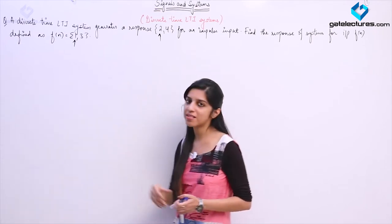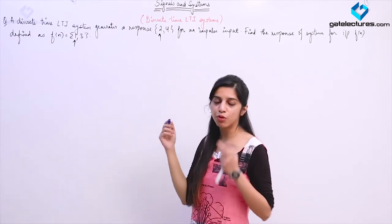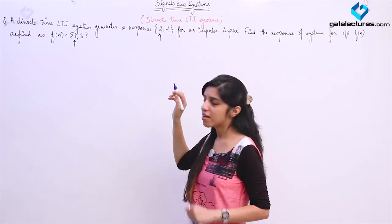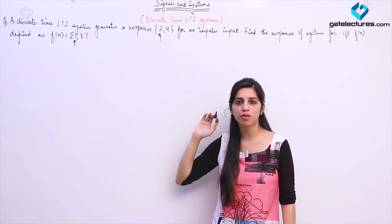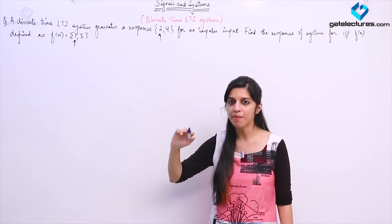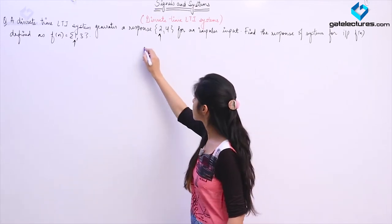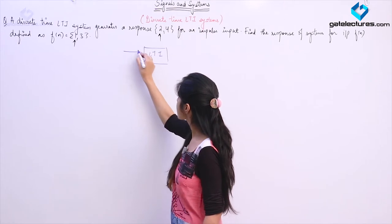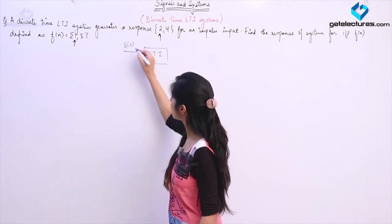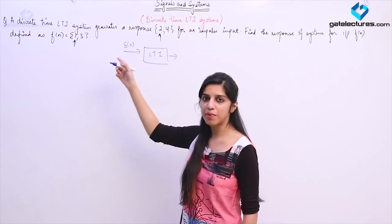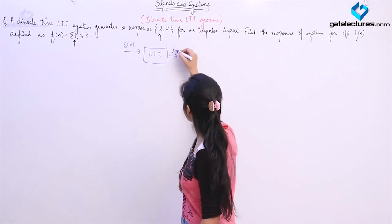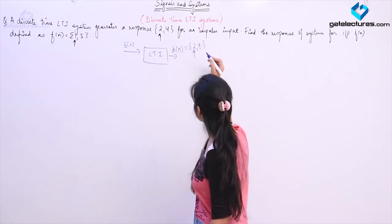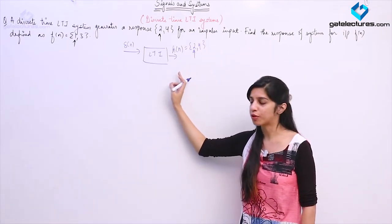Since the system is an LTI system, we can use the properties of linearity and time invariance to calculate the output. Here we are not calculating the output using the convolution integral. Suppose this is my LTI system. When I supplied input as δ[n], the unit impulse function, I got output as 2, 4.